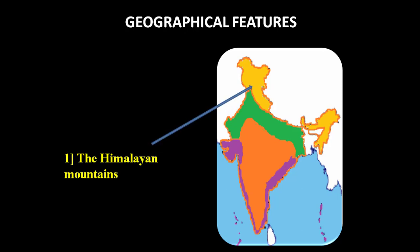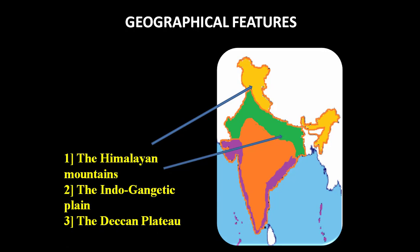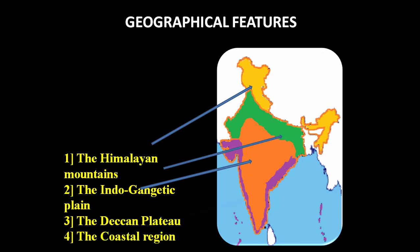When we come to the geographical features of India, they are majorly classified into four types. The first is the Himalayan Mountains, the second is the Indo-Gangetic Plain, the third is the Deccan Plateau, and the fourth is the Coastal Region. You can see the location and markings of these four important geographical features of India.